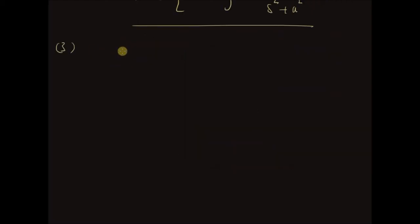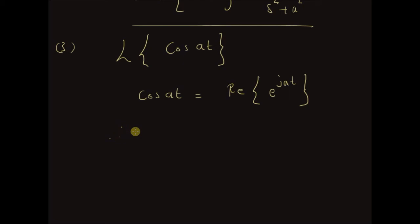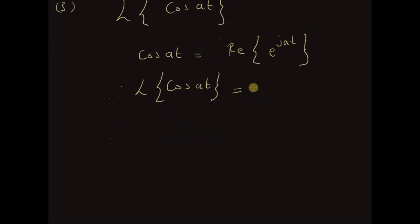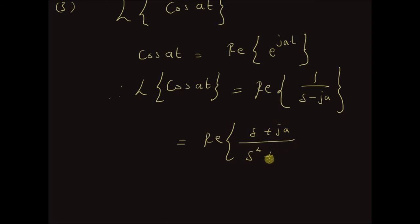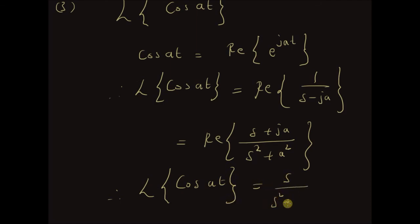Now let us look at the Laplace transform of cos of at. Since cos of at equals the real part of e to the power jat, the Laplace transform of cos of at equals the real part of 1 over s minus ja, which equals the real part of s plus ja over s squared plus a squared. Therefore the Laplace transform of cos of at equals s over s squared plus a squared. Thus we can use the Laplace transform of an exponential to derive the Laplace transforms of cos of at and sine of at.